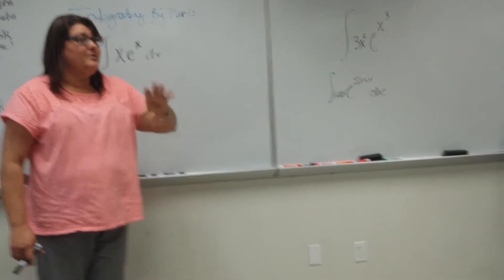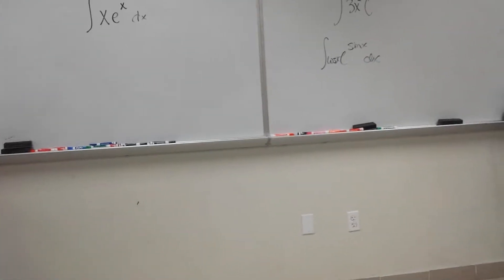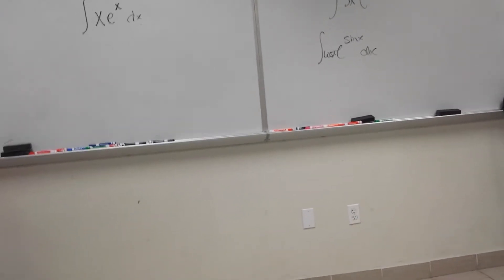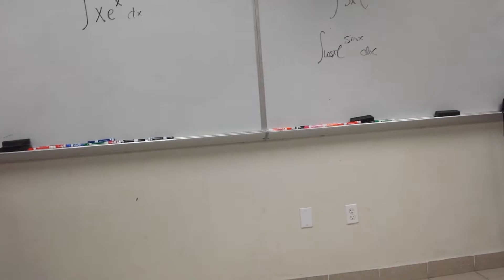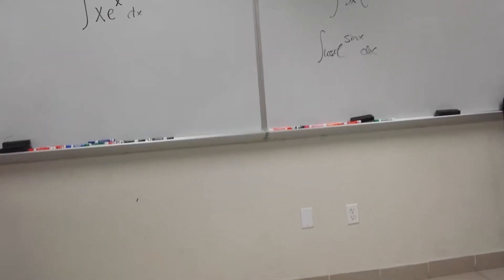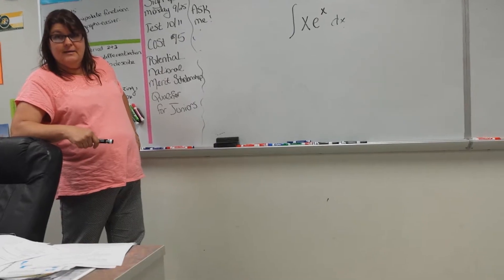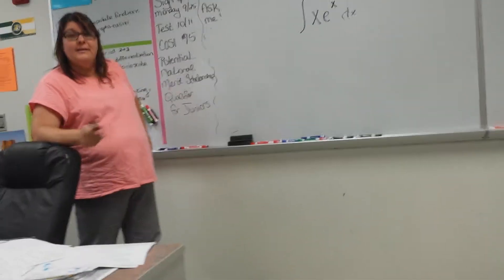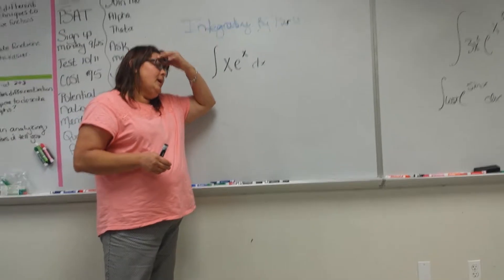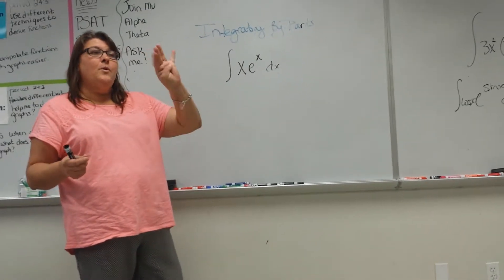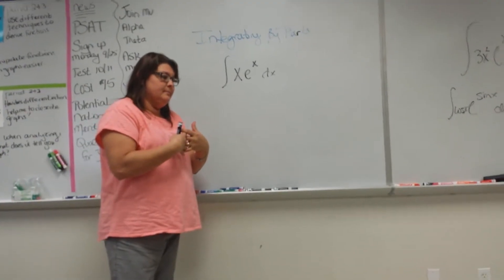The first thing I do is: look for what could be u, take its derivative — is the derivative available? Yes or no. If it's available, great. If not, I might have to use integration by parts. We got to about three techniques yesterday; integration by parts is number four. With integration by parts, you literally come up with four components that you plug together.